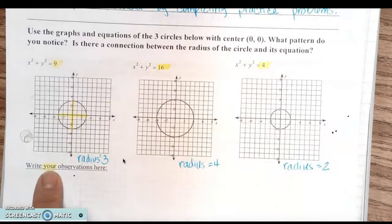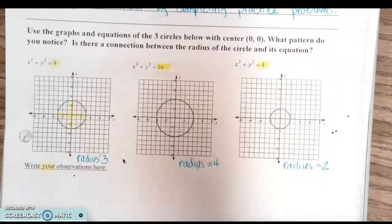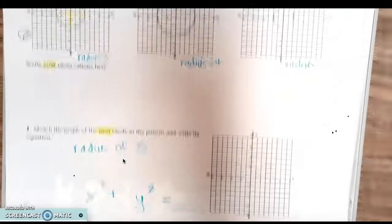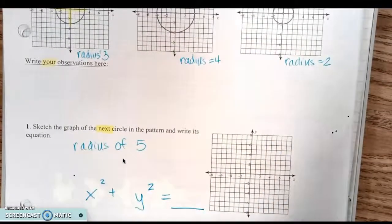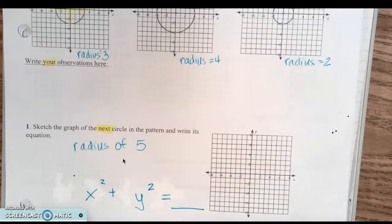Write your observation here — write down what you observe about the difference between the equation and the radius, and put it into your own words.